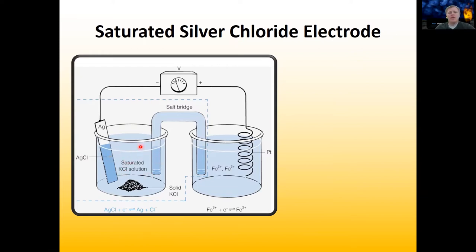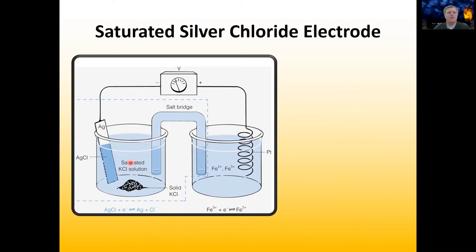To keep the concentration of chloride ions constant, we saturate it with potassium chloride. Saturated means we add enough potassium chloride so there's too much for it all to dissolve in the solution. If the silver gets reduced and a little bit of chloride ions complex with that silver bar, then we have a little more space for potassium chloride to dissolve, so it maintains that saturated concentration.